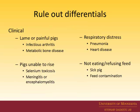To rule out major differentials — for lame or painful pigs, think about infectious arthritis; sending a limb or joint swab addresses that. Metabolic bone disease is addressed by sending feed, liver, and rib. For pigs that can't get up, selenium toxicosis affects motor neurons in the spinal cord — these pigs often won't be painful and won't refuse feed, which would skew you away from ionophores. Meningitis or encephalomyelitis could also cause inability to rise. Respiratory distress may be more of a herd-level issue, whereas heart disease would more likely be an individual animal problem. Feed refusal has been discussed in many research papers — researchers have difficulty inducing ionophore toxicity experimentally because pigs don't want to eat the contaminated feed.